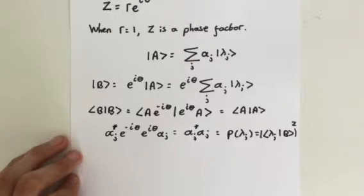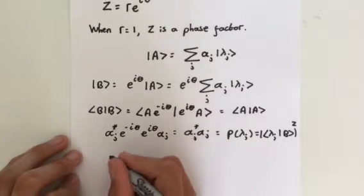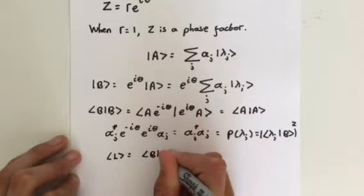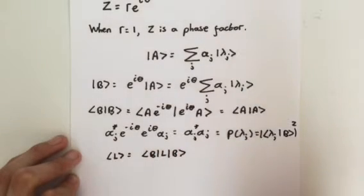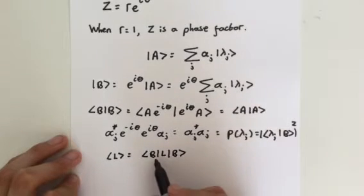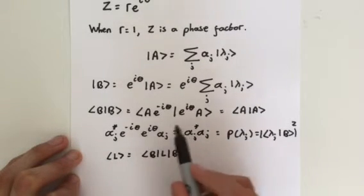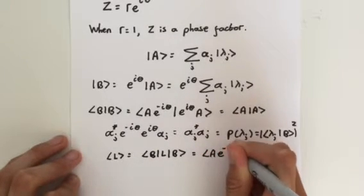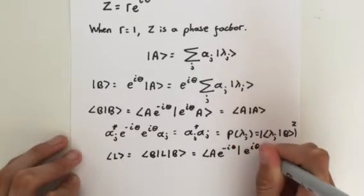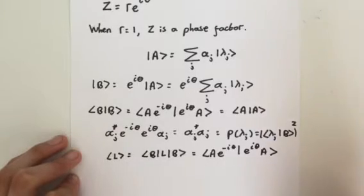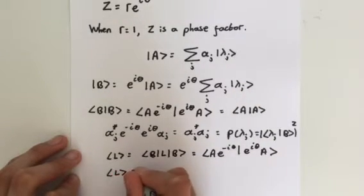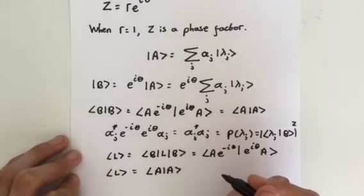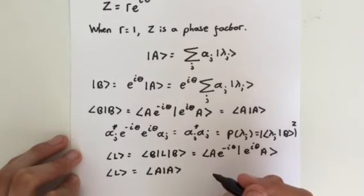Finally, let's use the same trick for the expectation value of an observable, L. We know that the expectation value of an observable L is equal to b, L, b. If we substitute b for e to the i theta A, we can get A, e to the minus i theta L, e to the i theta A, like that. This can be written as the expectation of L is equal to A, L, A. In other words, L has the same expectation value in state B as it does in state A.